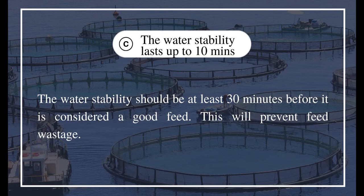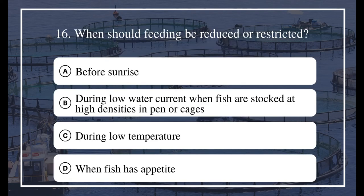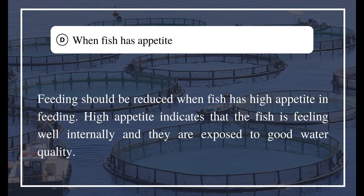Question 16: When should feeding be reduced or restricted? A) Before sunrise, B) During low water current when fish are stocked at high densities in pens or cages, C) During low temperature, D) When fish has high appetite. The answer is D) When fish has high appetite. Feeding should be reduced when fish has high appetite — high appetite indicates that the fish is feeling well internally and is exposed to good water quality.